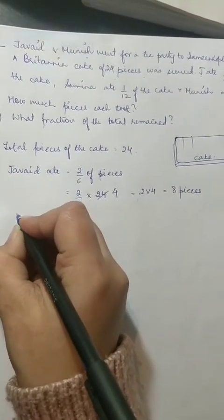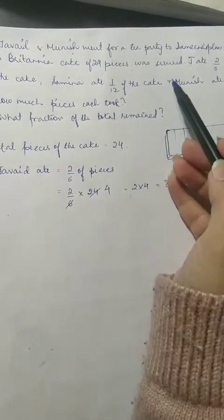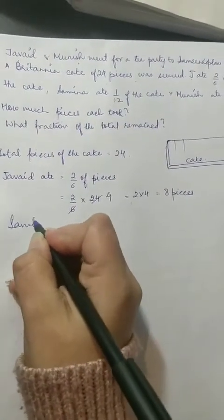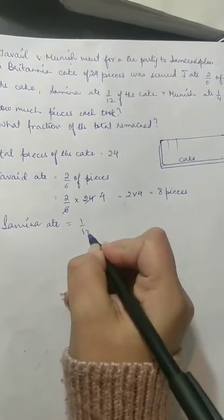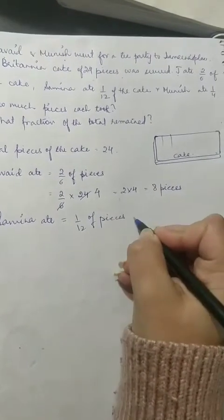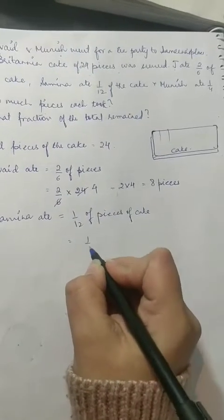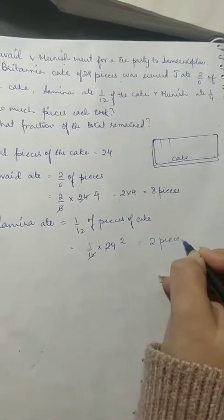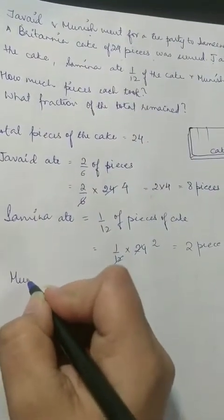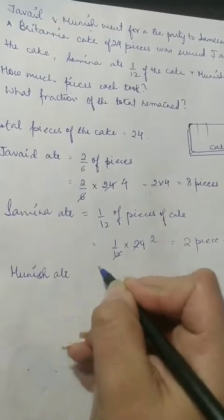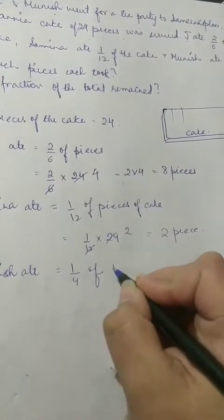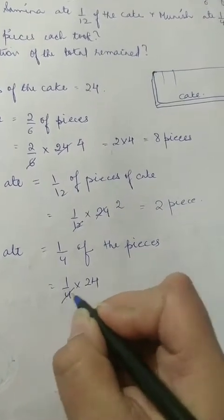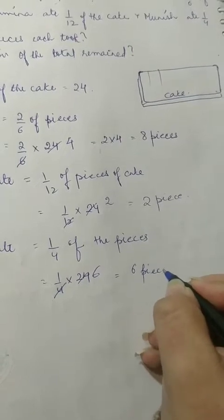अभी हमें Javed का पता चल गया, बाकी दोनों का भी करेंगे. Next one is Samina: 1 by 12 of the pieces of cake — that is 1 by 12 into 24. 12 twos are 24, तो उसने 2 pieces खाया. Next Munish: 1 fourth of the pieces — 1 fourth of 24. 4 sixes are 24, मतलब उसने 6 pieces खाए.